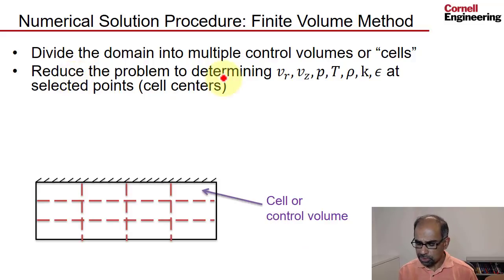And then you reduce the problem to determining our primary variables, the seven functions that we have at selected points, which are the cell centers in the flavor of the finite volume method that Fluent uses. So we determine our seven variables at these 12 cell centers. And these are the selected points, so you're not determining it everywhere. And that idea is called discretization. So you discretize a problem.